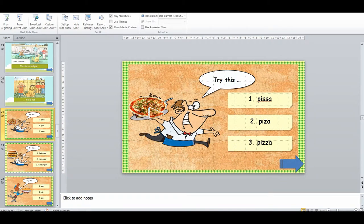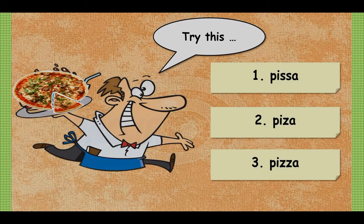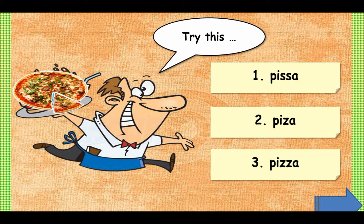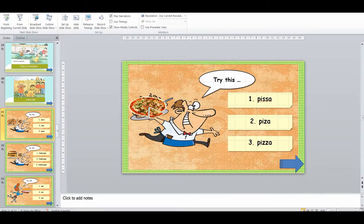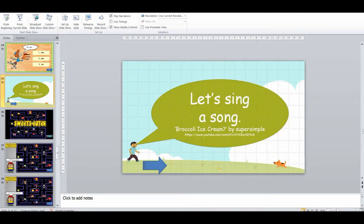Then we have the questions, where they've got multiple choice. This one is actually not different food choices like hamburger, pizza, or ice cream — it's different spellings. At this point students have started to learn more of the reading aspect of English, so I'm trying to add more spelling differences. Then I'll do another version of the 'Broccoli Ice Cream' song — there are a couple more versions — and we all sing and dance.